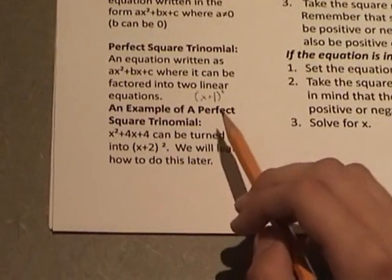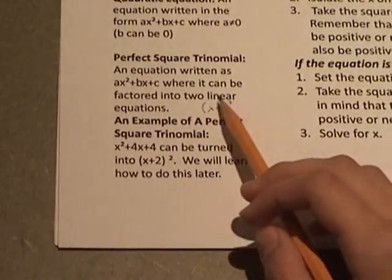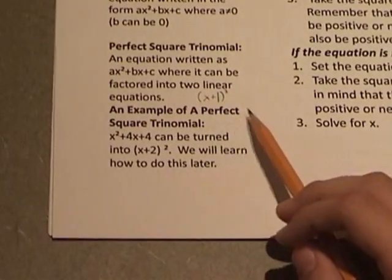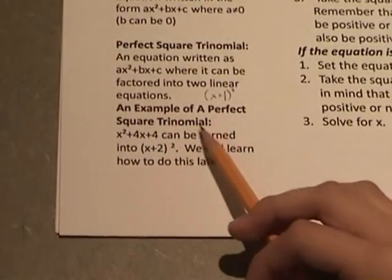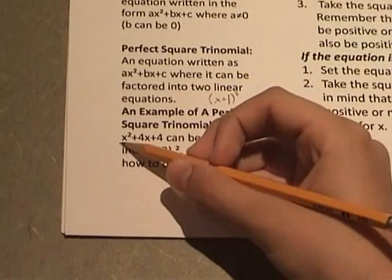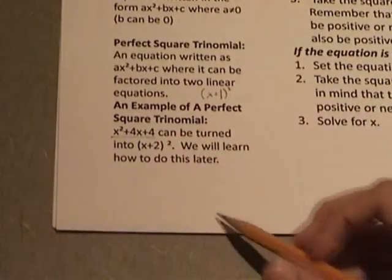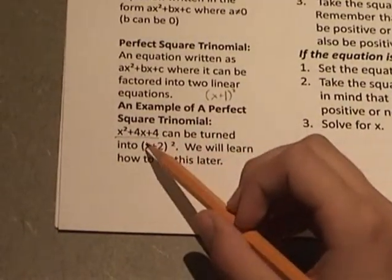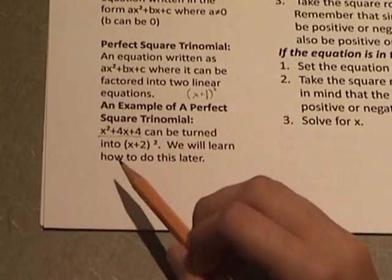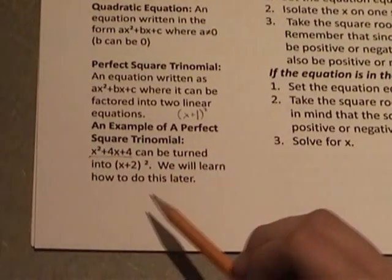An example of a perfect square trinomial that is not in factored form is x squared plus 4x plus 4. This can be factored into x plus 2 squared. We will learn how to do the factoring later.